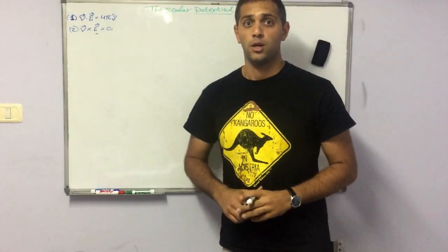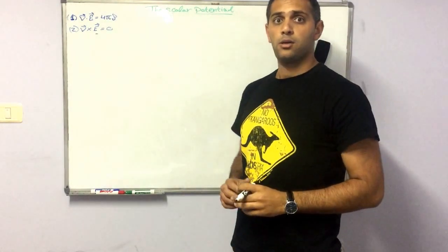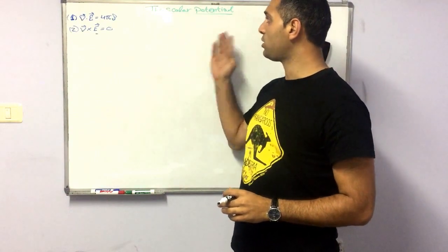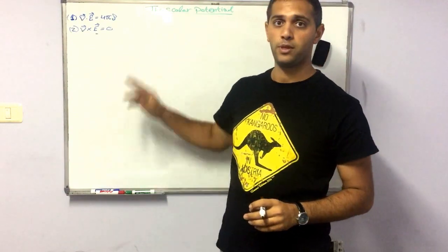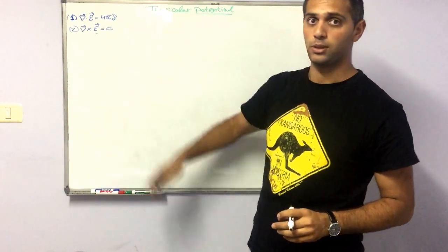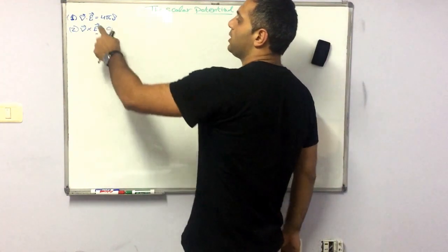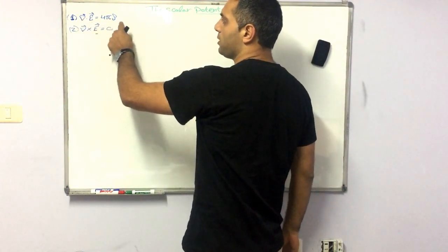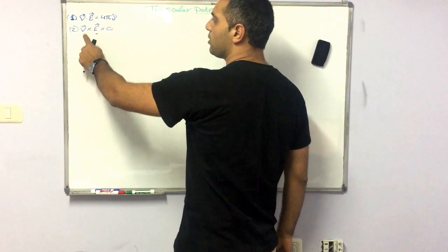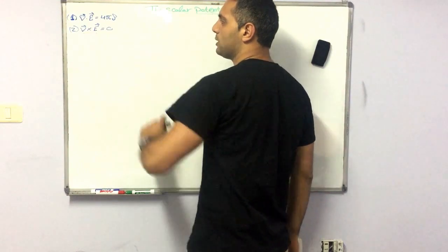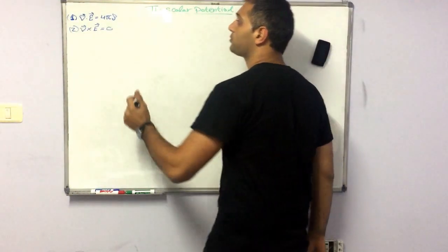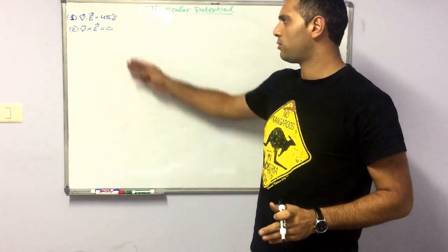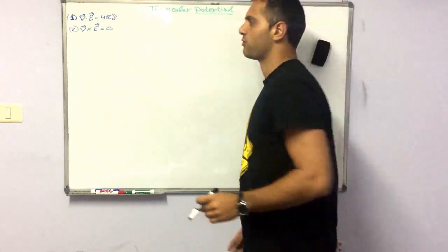Hi guys, today we will see how to derive the scalar potential from the two electrostatic Maxwell equations: the divergence of E equals 4π times the charge density, and the curl of E equals zero, which means that there are no rotating sources of the electric field.